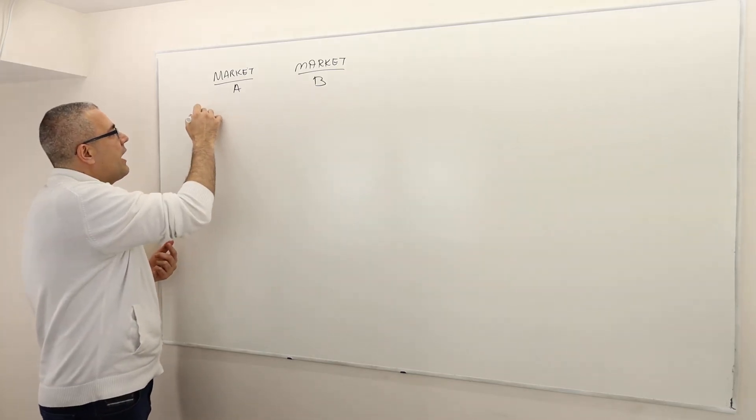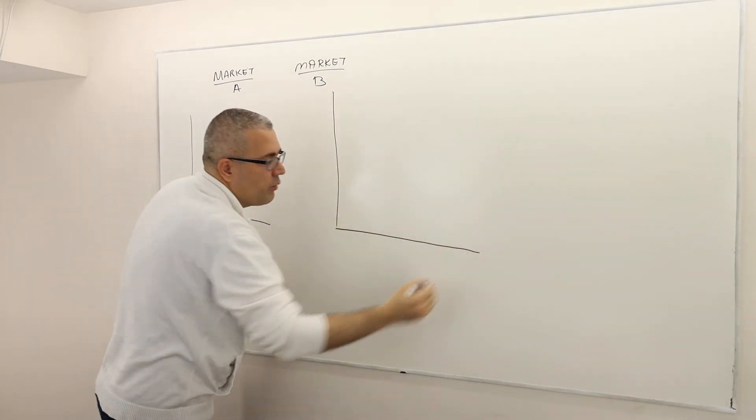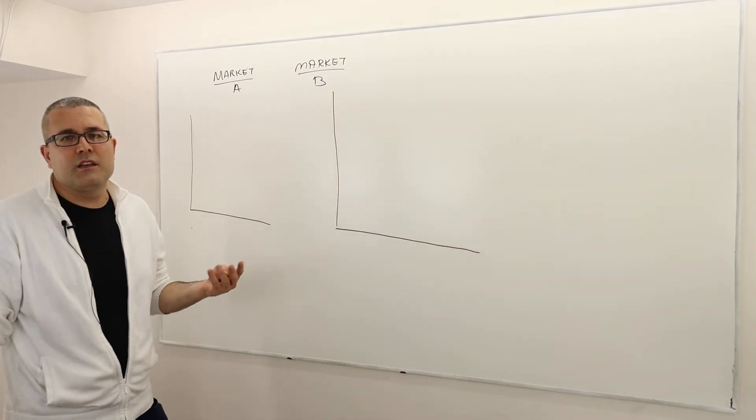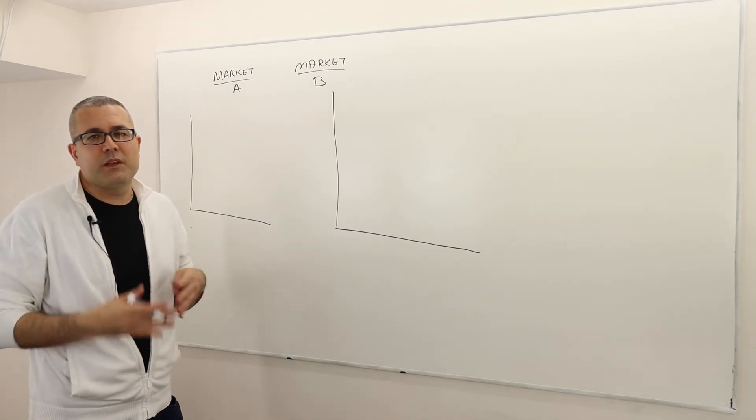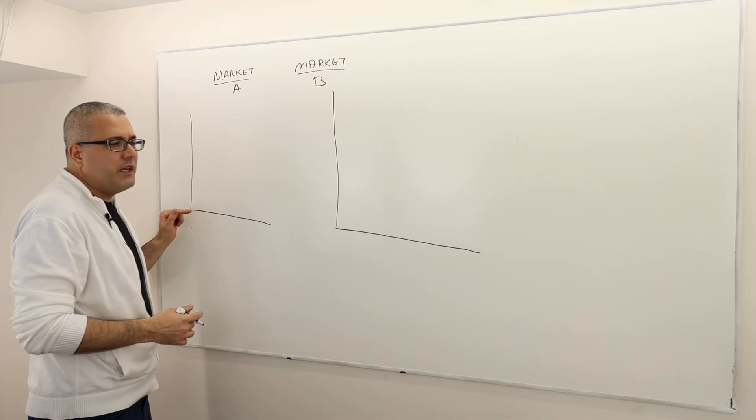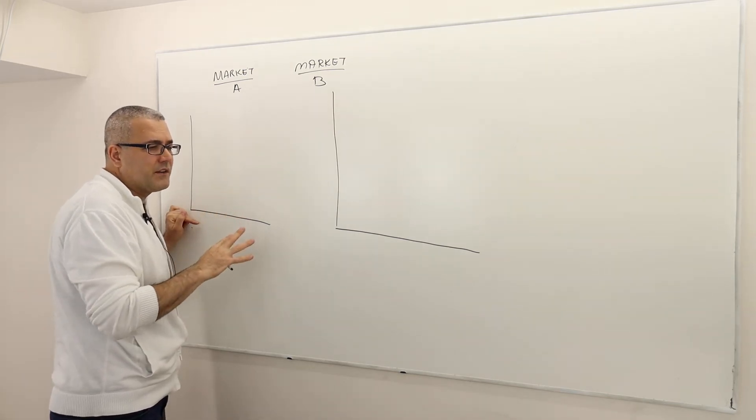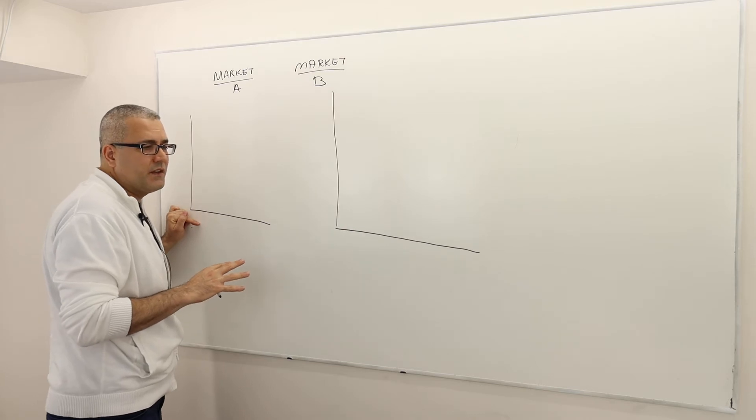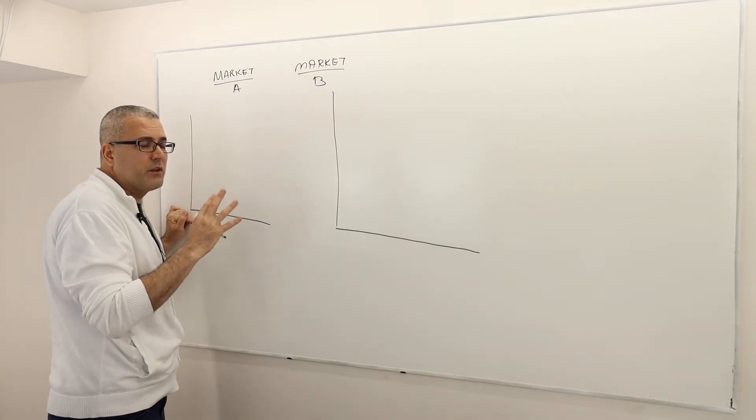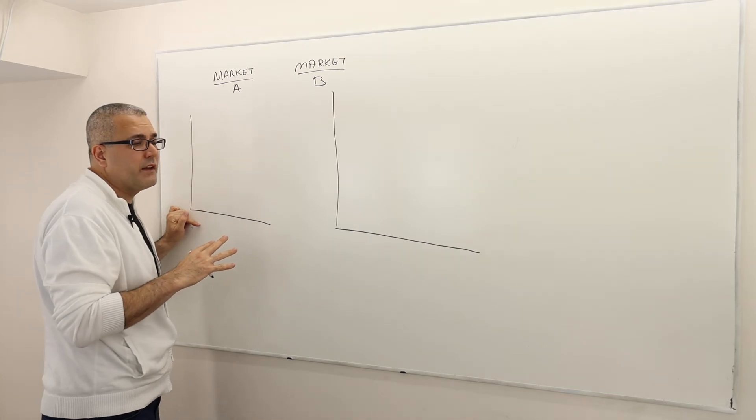We do not have to have a straight demand and straight supply curves, but we usually draw straight demand and supply curves because that's for simplification. So here in market A, remember it says there's going to be a tax. And so this tax is going to have a significant effect on the price consumers pay, but it will not affect the equilibrium quantity very much.